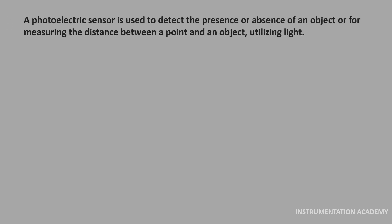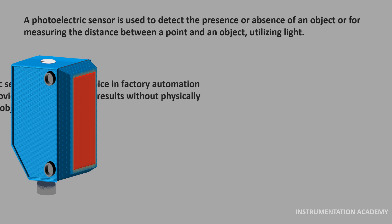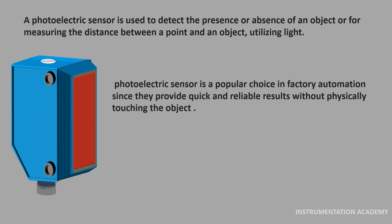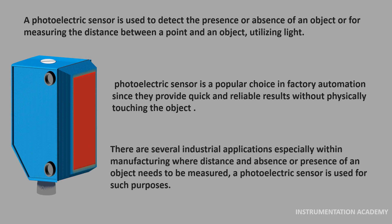A photoelectric sensor is used to detect the presence or absence of an object or for measuring the distance between a point and an object utilizing light. Photoelectric sensors are a popular choice in factory automation since they provide quick and reliable results without physically touching the object. There are several industrial applications, especially within manufacturing, where the distance and absence or presence of an object needs to be measured. A photoelectric sensor is used for such purposes.